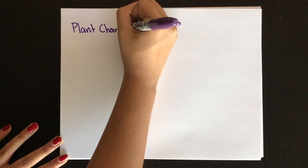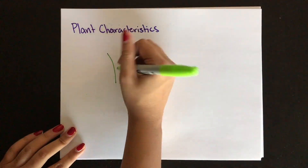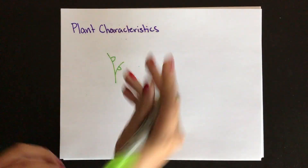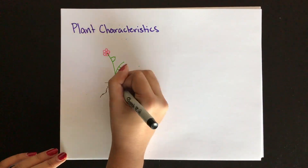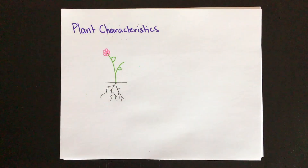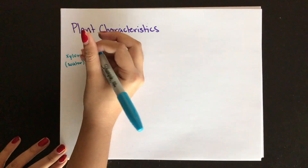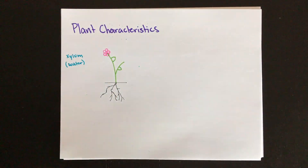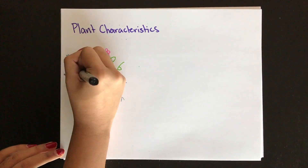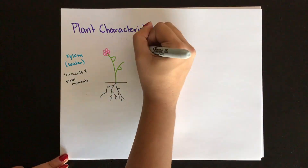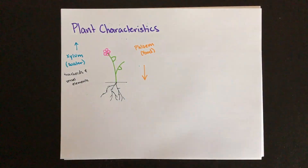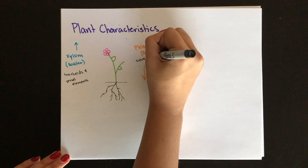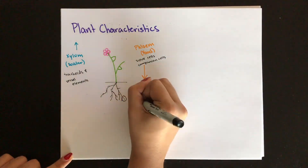Next we're going to talk about the xylem and the phloem tissues within the veins of the plant that carry water and nutrients. Roots anchor the plants and the hairs increase the surface area and allow for more absorption of water. The xylem transports water up and is made of tracheids and vessel elements. Food from photosynthesis is transported via the phloem which contains sieve cells and companion cells.